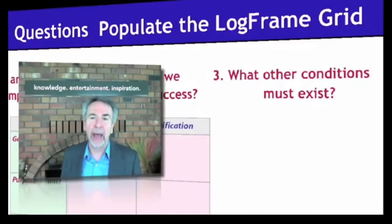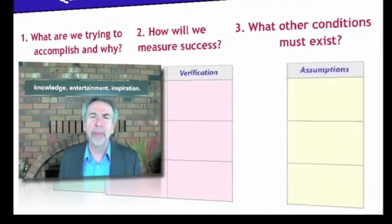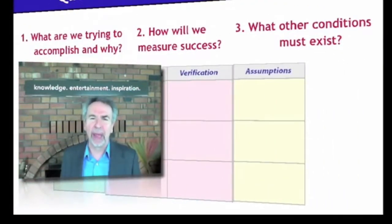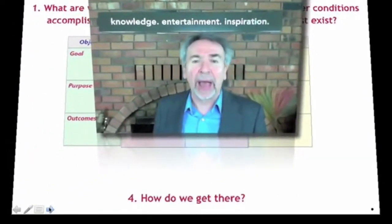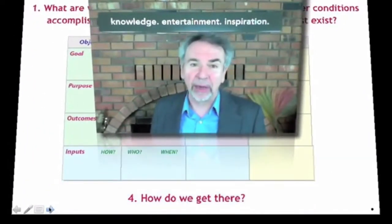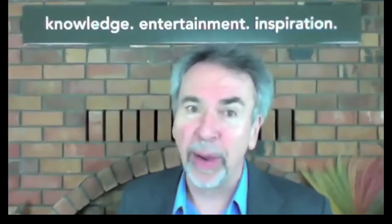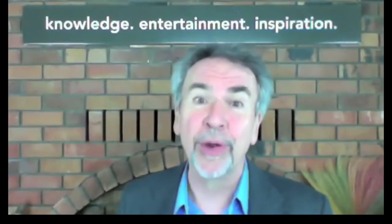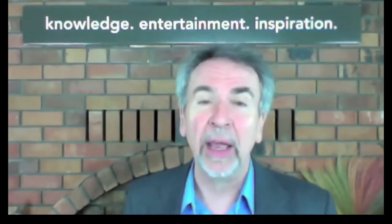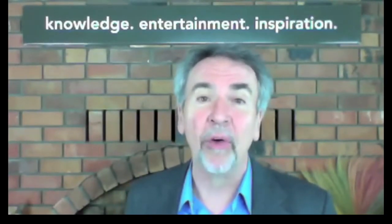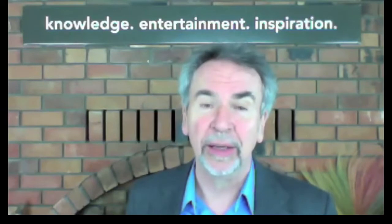Then we're going to ask: what other conditions must exist? What assumptions do we have to make for this if-then logic to be valid? The fourth question is: how do we get there? In my experience, most people jump prematurely to the fourth question. That's like trying to paint the house before you've built it.